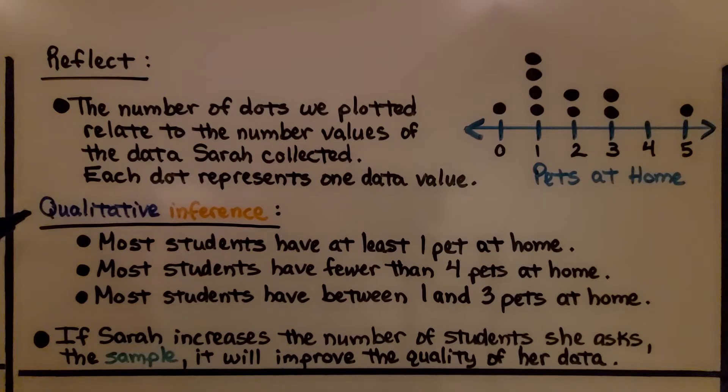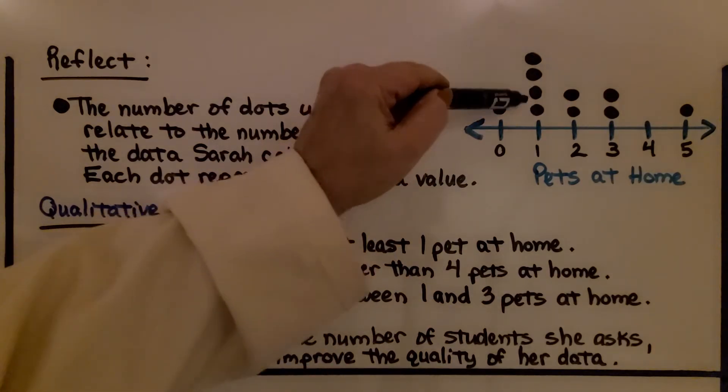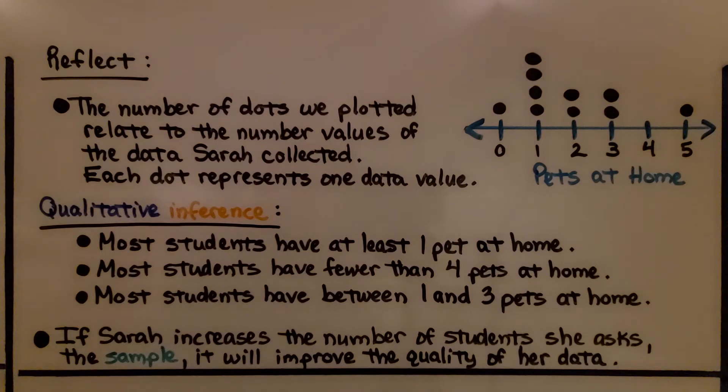The qualitative inference, that's the inference that's concerned with quality. Most students have at least one pet at home. We can see one has the most dots. Most students have fewer than four pets at home.